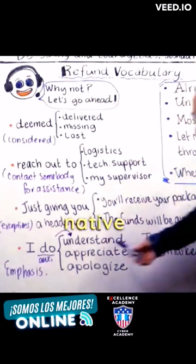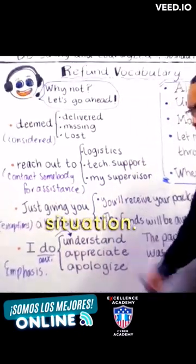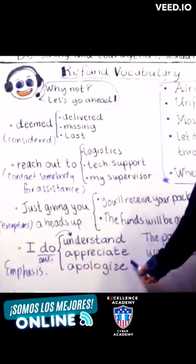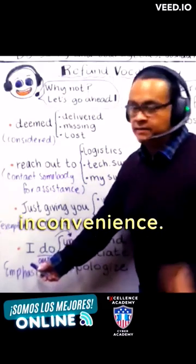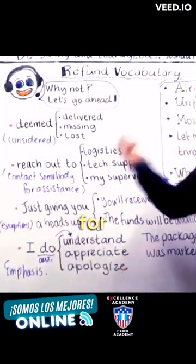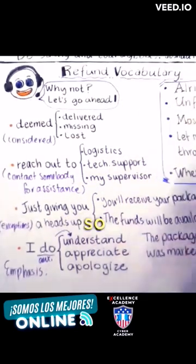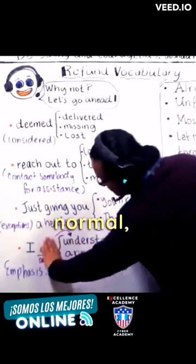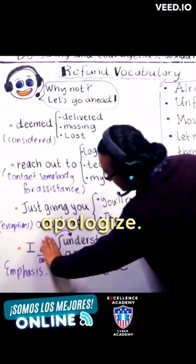So here, let's say a native speaker would say: 'I do understand the situation.' 'I do appreciate your help, Mr. Customer. I'm sorry about the inconvenience. I do apologize for the mishap.' So without the auxiliary, you just sound normal, like neutral — 'I understand. I appreciate. I apologize.'